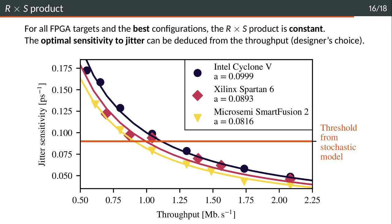He only has to specify the throughput and then we give the jitter sensitivity from these values. Another thing here is that we can actually draw a threshold for the jitter sensitivity that we obtain from the stochastic model. We see that according to this threshold, it will be hard to get a PLL TRNG with a throughput higher than 1 Mbps if we want full entropy at the output of the generator. That's very interesting from the designer's point of view because by just picking the throughput, we know the other parameters that must be set.